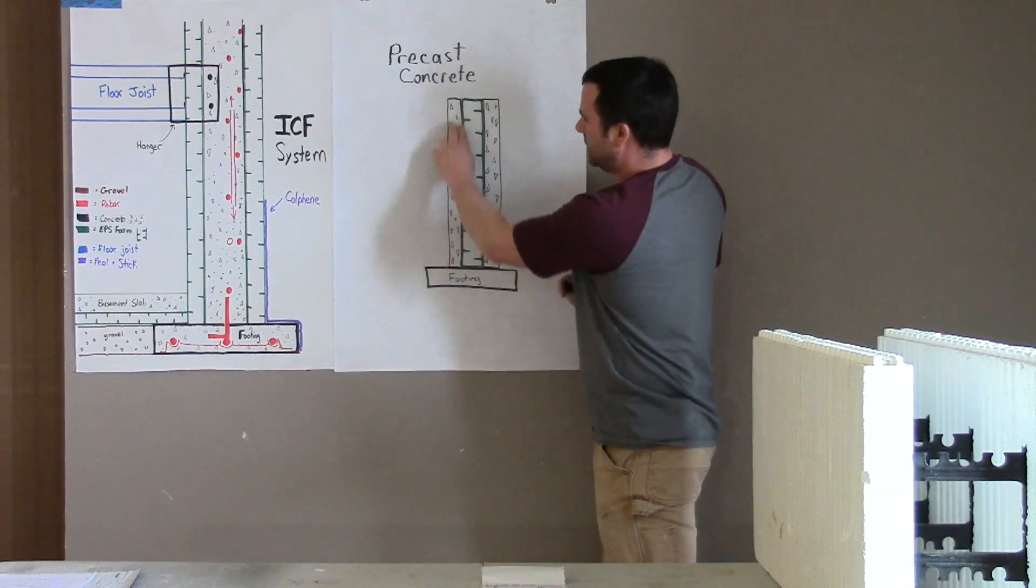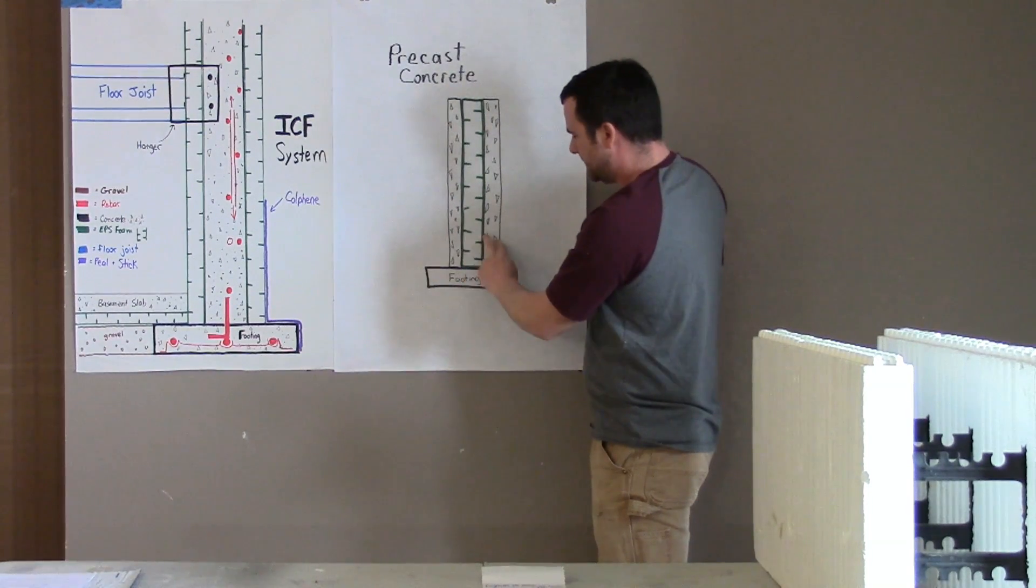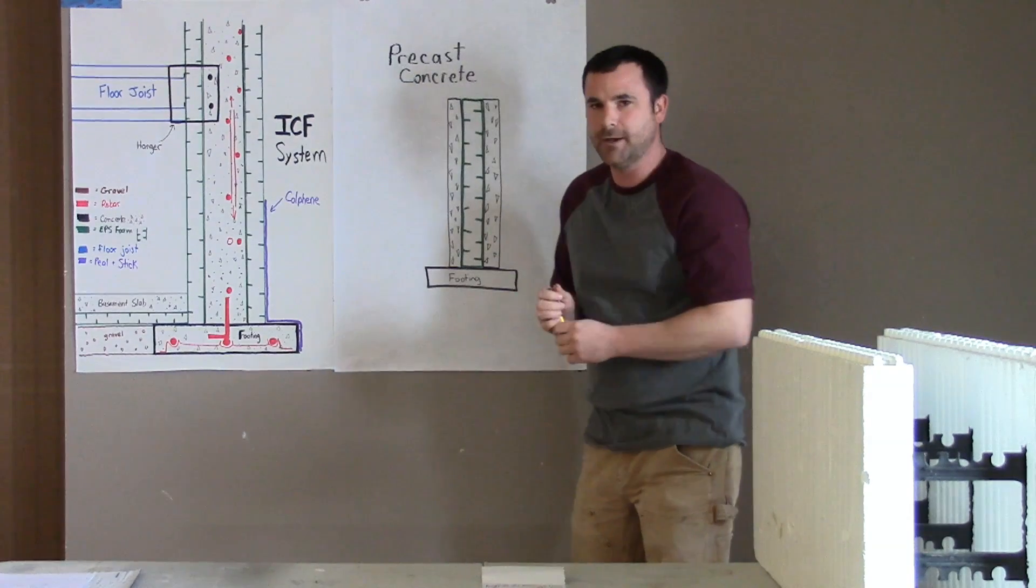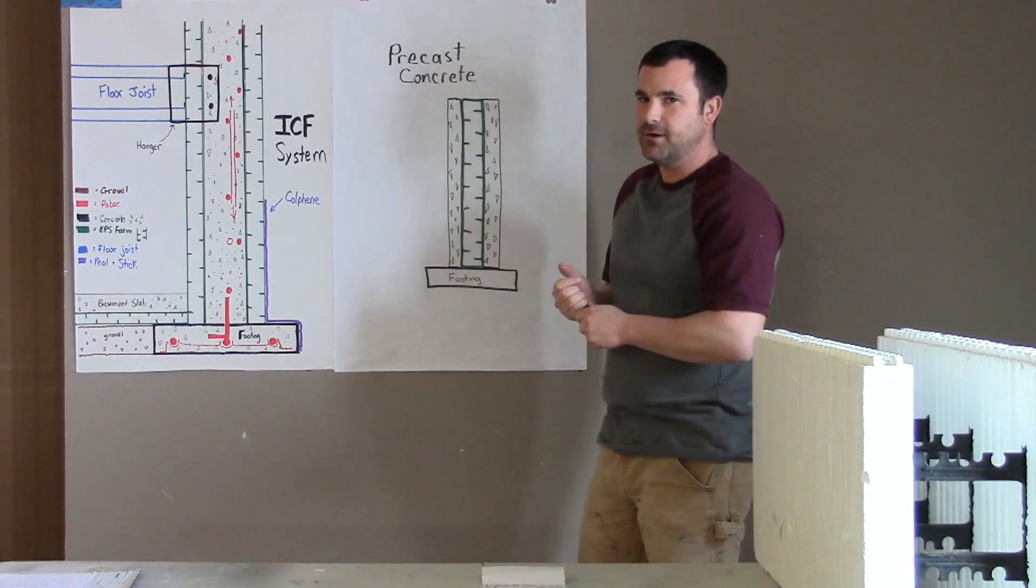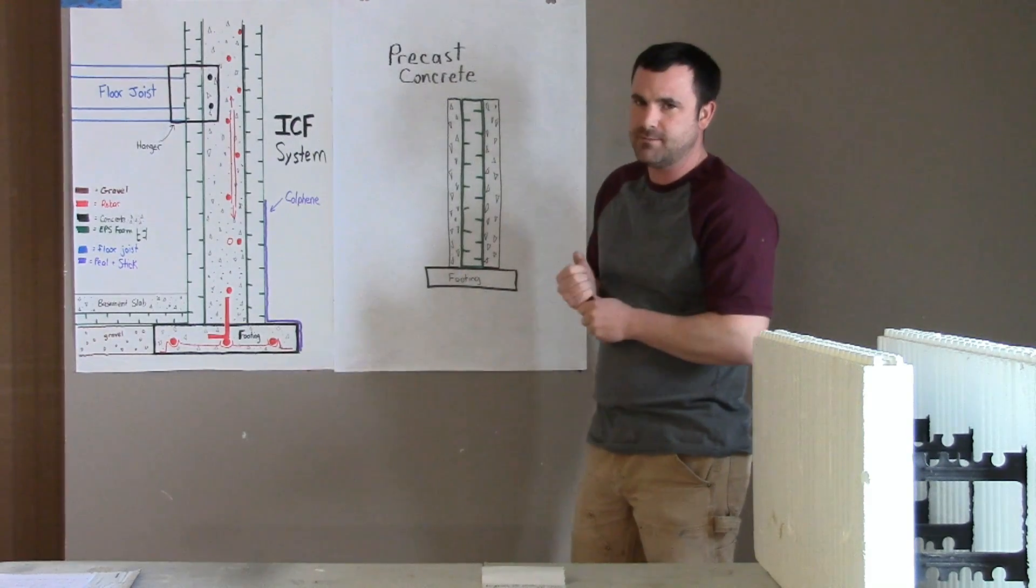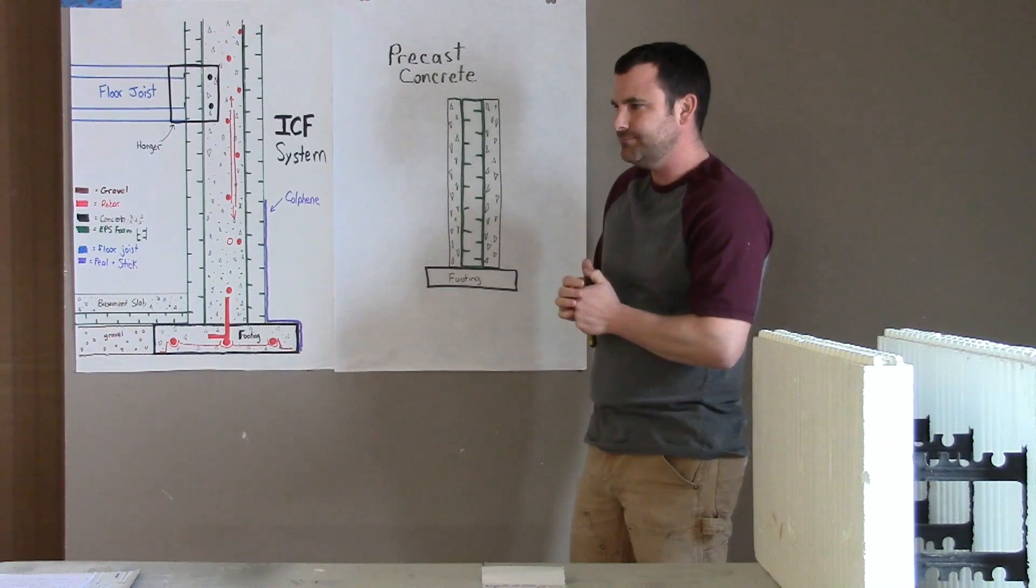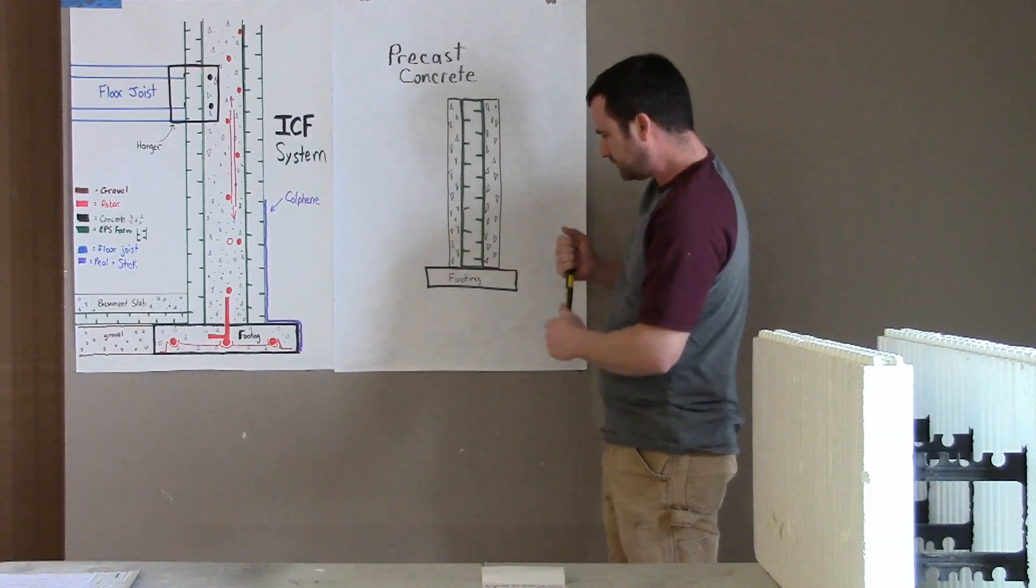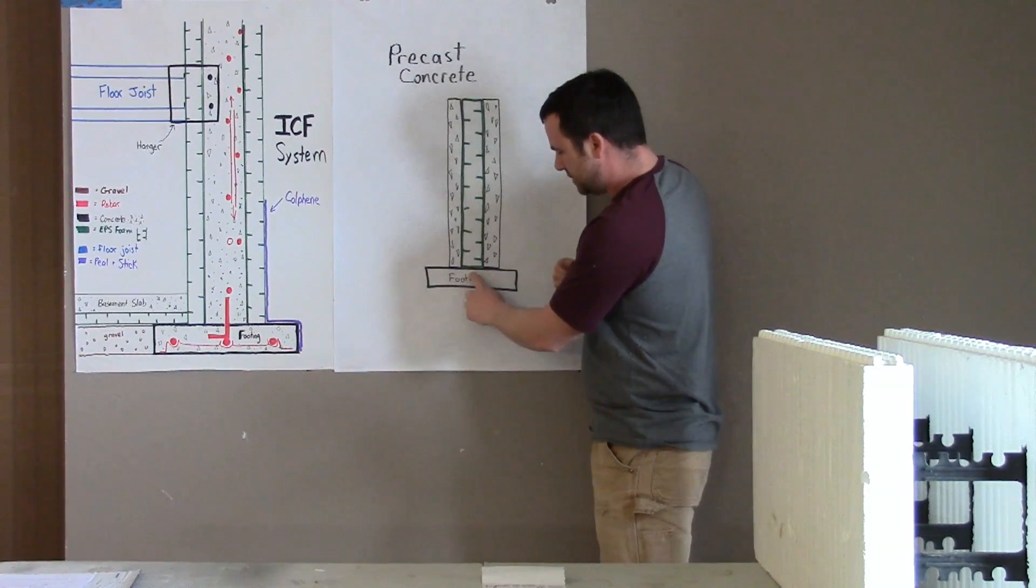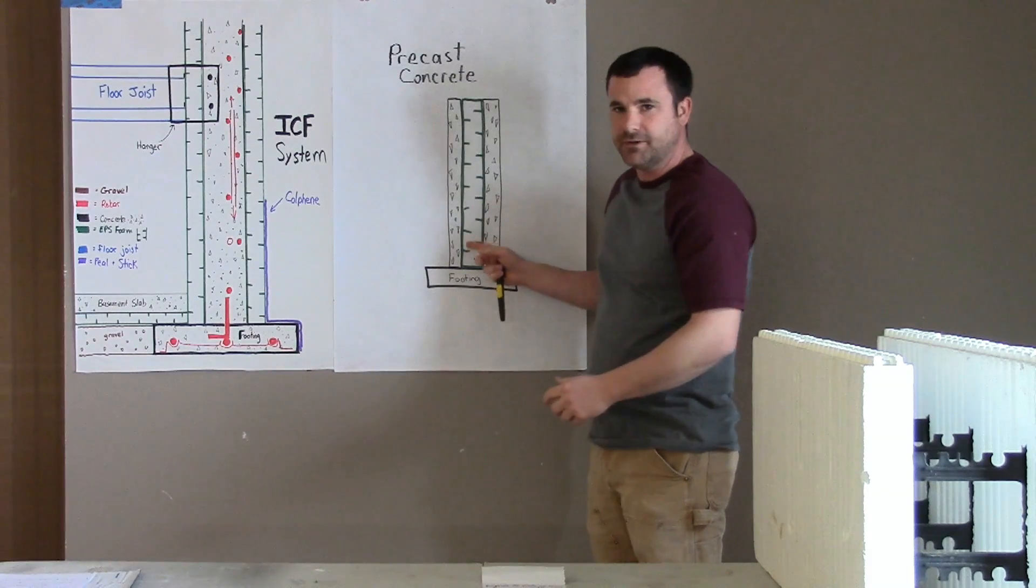A couple things I've heard about this system - I'm just talking about why I like the ICF, all systems have their place - but I'm not exactly sure how you do a good connection from your footing to the wall. Like, I'm thinking frost pushing up or your footing falling away.